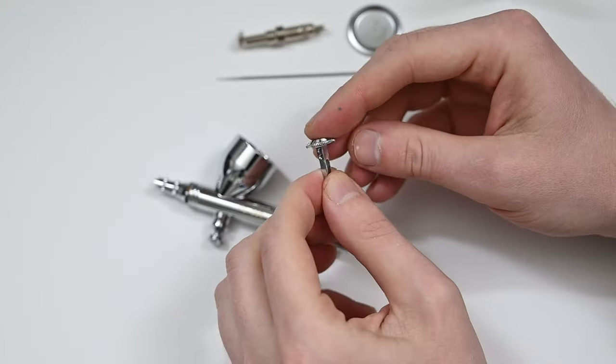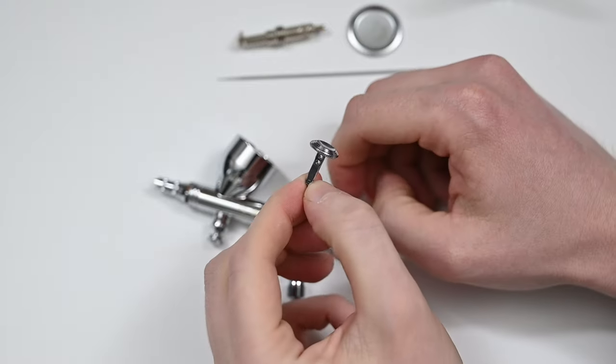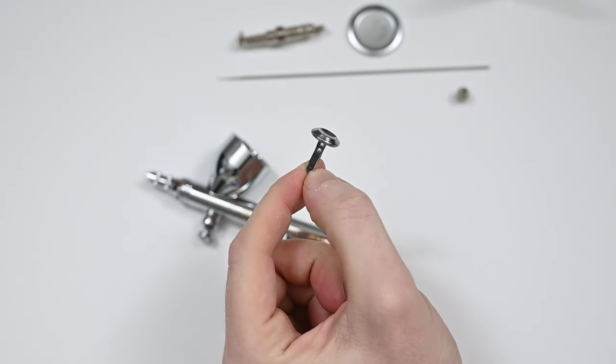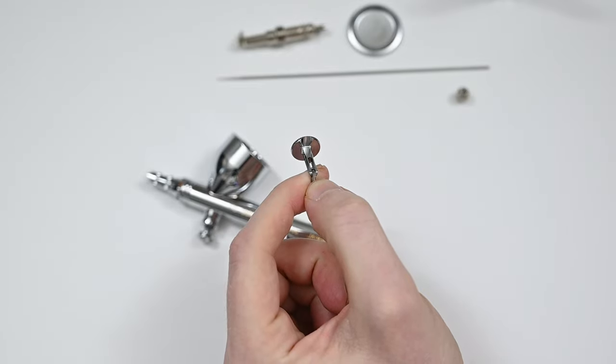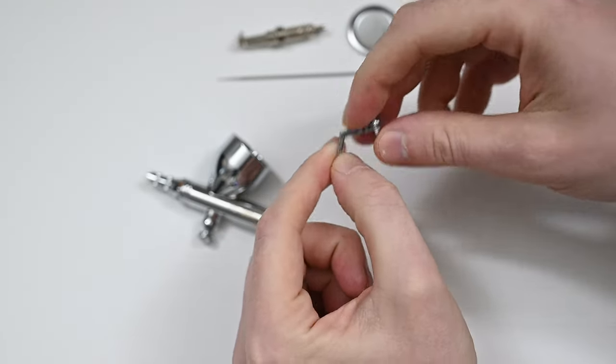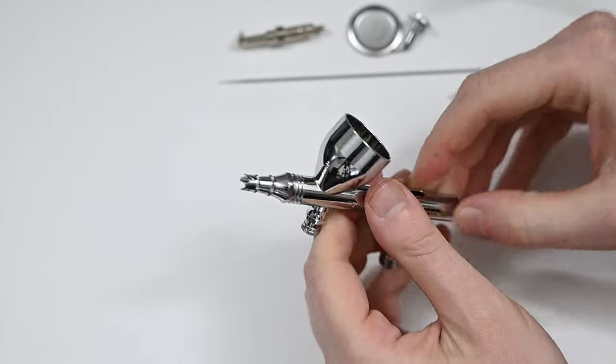Once the needle's out, you're able to remove the trigger. This is a very comfortable one. It's your standard round trigger. I've never had issues with these, and I've always liked them. Underneath it, you'll see this small groove cut out. This always goes toward the back of the airbrush when you place it back in.